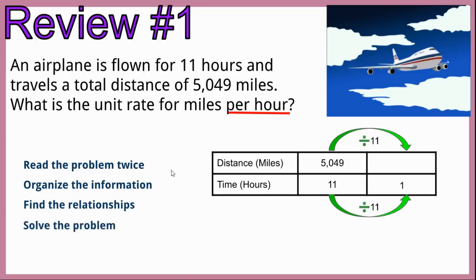We're going to go ahead and solve the problem. You can plug this into a calculator. 5,049 divided by 11 is going to be 459. So the answer is the unit rate is 459 miles per hour.